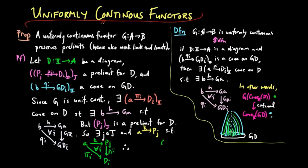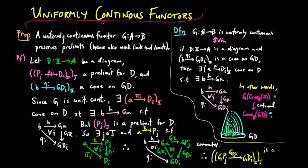Therefore, by taking this green commuting triangle by G to category B and pre-composing it by the triangle on the far left, we have a factorization of QI by GPJI for each I. Therefore, GPJI is a pre-limit for GD.